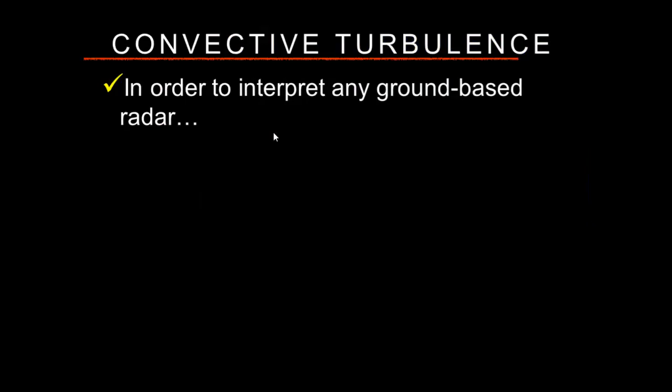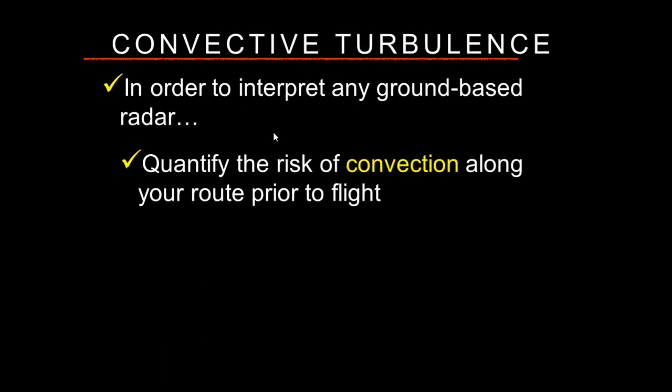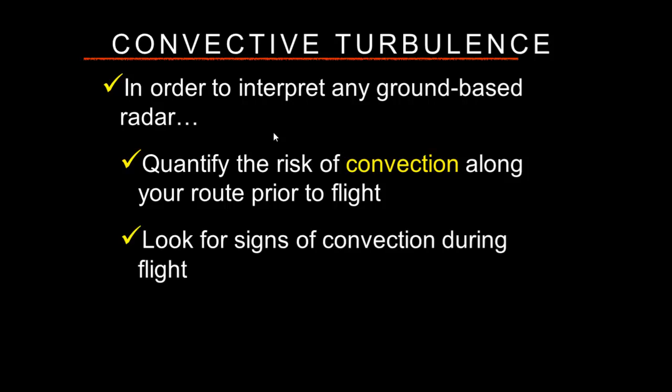To interpret any ground-based radar, you first have to quantify the risk of convection along your route — basically looking at that big weather picture. Look for signs of convection, examine convective outlooks prior to flight and while in flight. Look at the clouds — vertically developed clouds with very hard edges are convective clouds. When they get deeper and deeper, that's when we worry about severe or extreme turbulence.